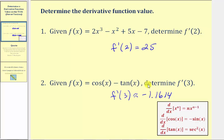Which again means the slope of the tangent line at x equals three is approximately negative one point one six one four. I hope you found this helpful.